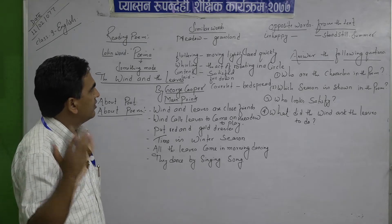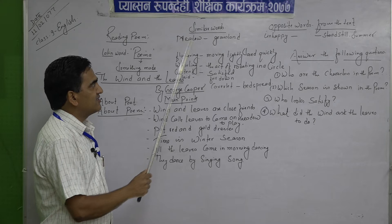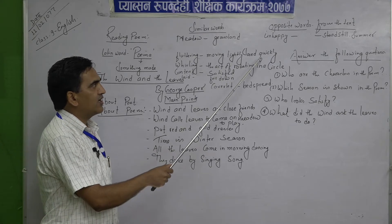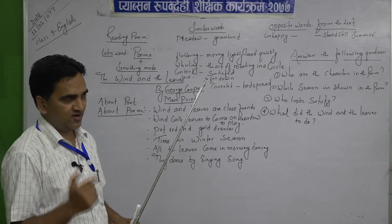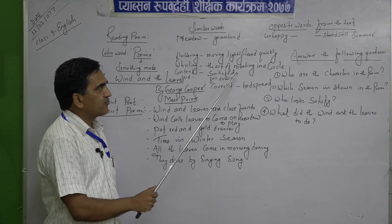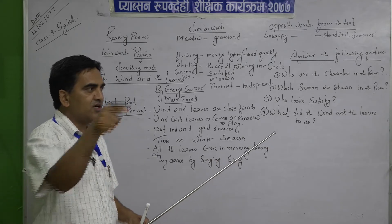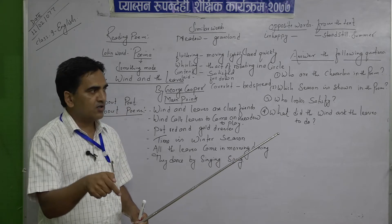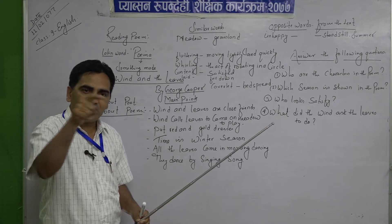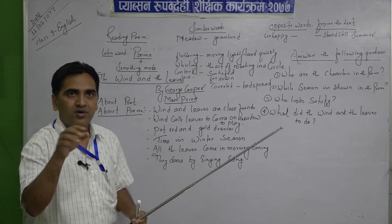Can you tell me: what is the similar word of 'grassland'? The similar word is 'meadow.' What is the single word for 'moving lightly and quickly'? Fluttering. What is the act of rotating in a circle? Wailing — moving in a circle. Wind sometimes comes in a circle, moving from high pressure to low pressure. What is the similar word of 'satisfied'? Content.